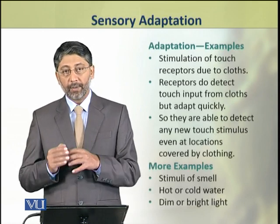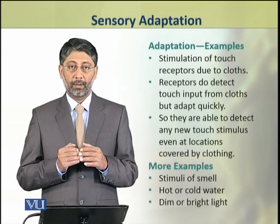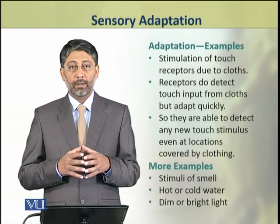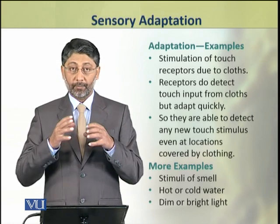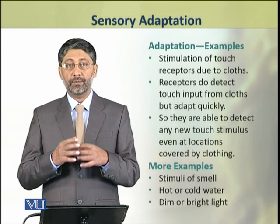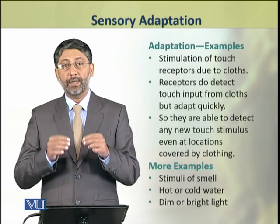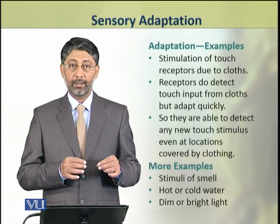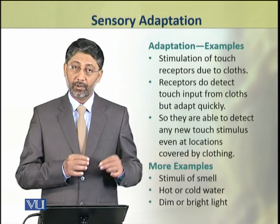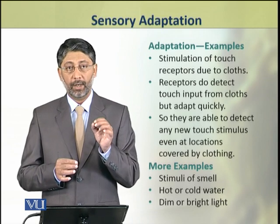We shall take a few examples of adaptation. First, adaptation to touch stimuli. Our clothing also touches our skin. The stimulus of touch from clothes is perceived, but our nervous system adapts to this stimulus quickly so that we are able to detect new touch stimuli even in the presence of this continuous or persistent stimulation from our clothes.